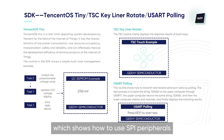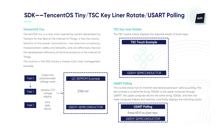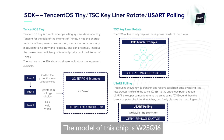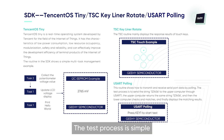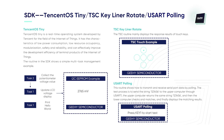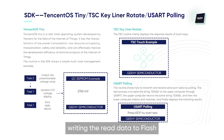There is a routine which shows how to use SPI peripherals to read and write an external flash chip. The model of this chip is W25Q16 and it has a size of 2 megabytes. The test process is: reading flash ID and device ID, writing the read data to flash, and finally comparing them.